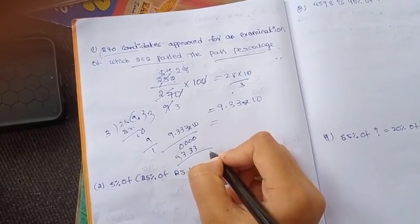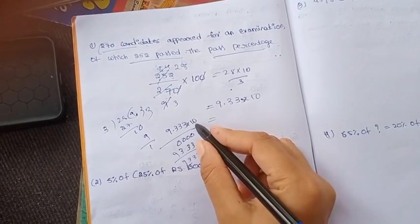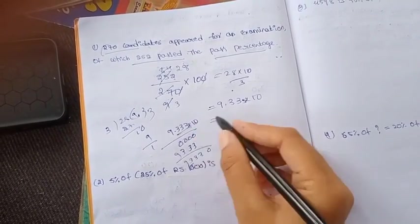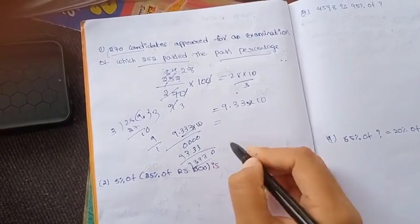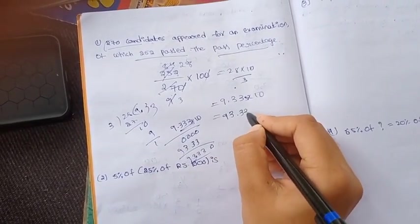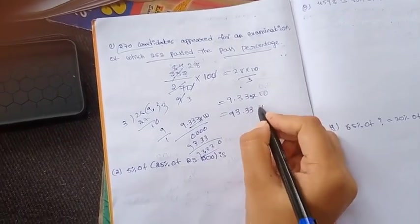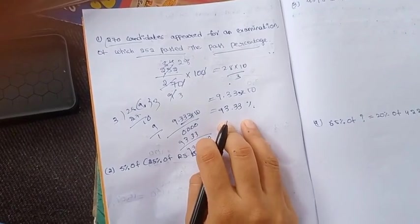9.333 into 10 gives us 93.33 percentage. The pass percentage is 93.33%.